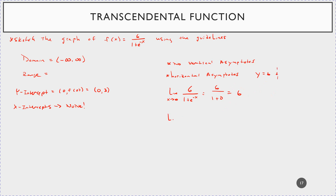Let's check what happens as x goes to negative infinity. The negative-negative becomes positive, so e raised to an infinite power goes to infinity. That means 6 divided by an ever bigger number goes to 0. So this limit is 0, giving us two horizontal asymptotes: y = 0 and y = 6.